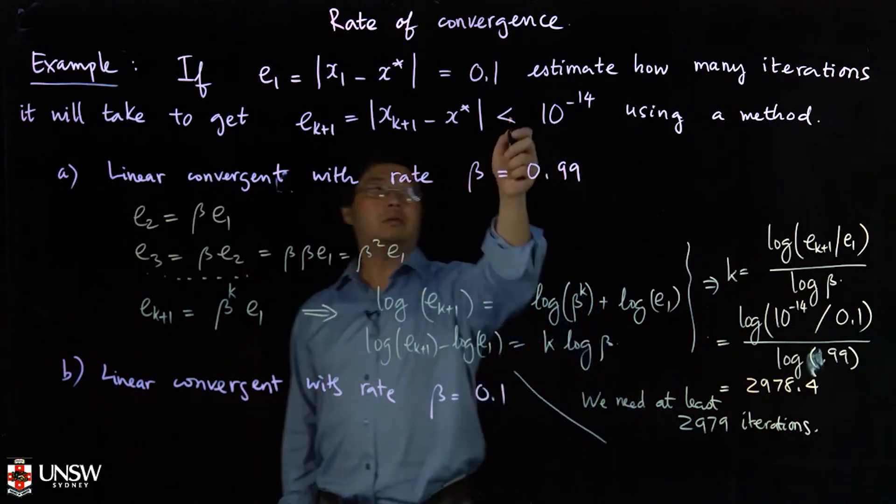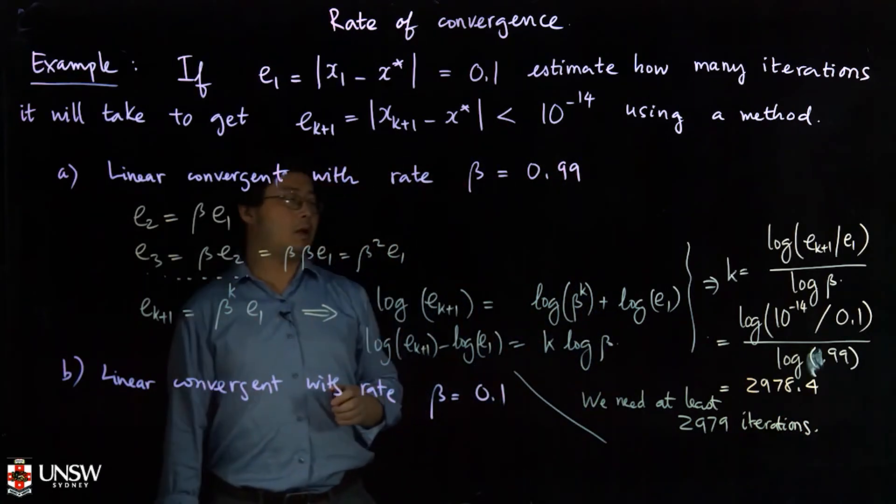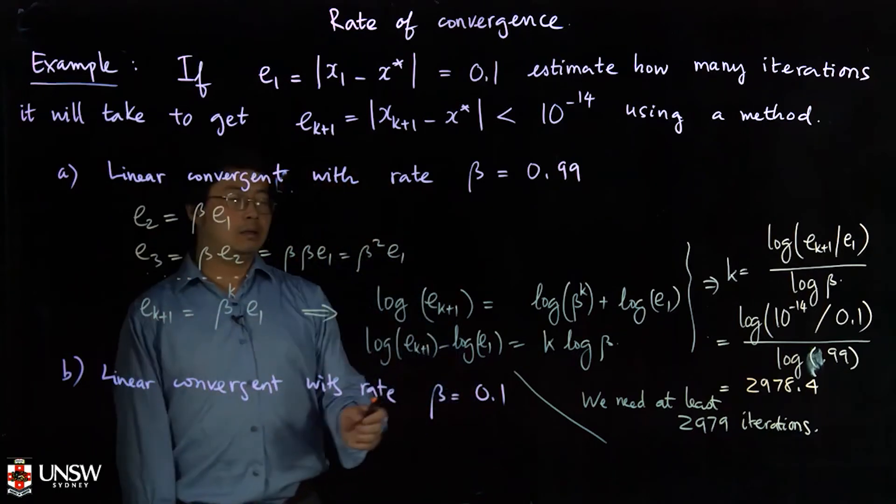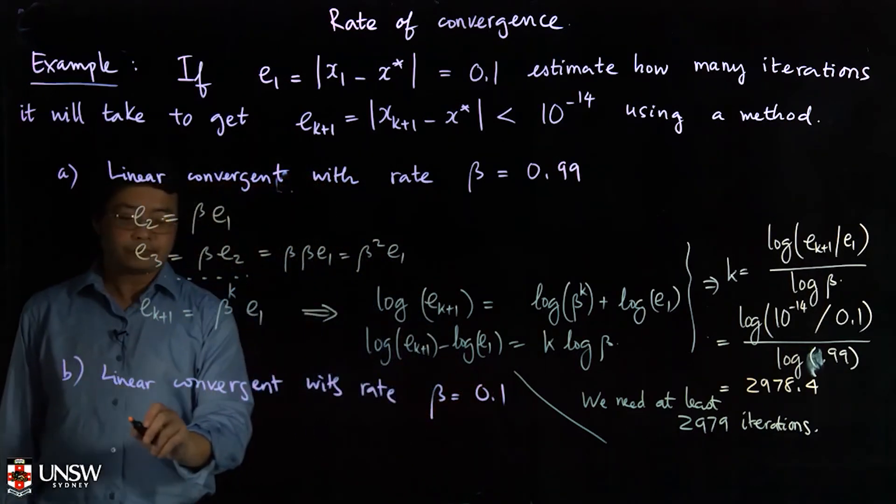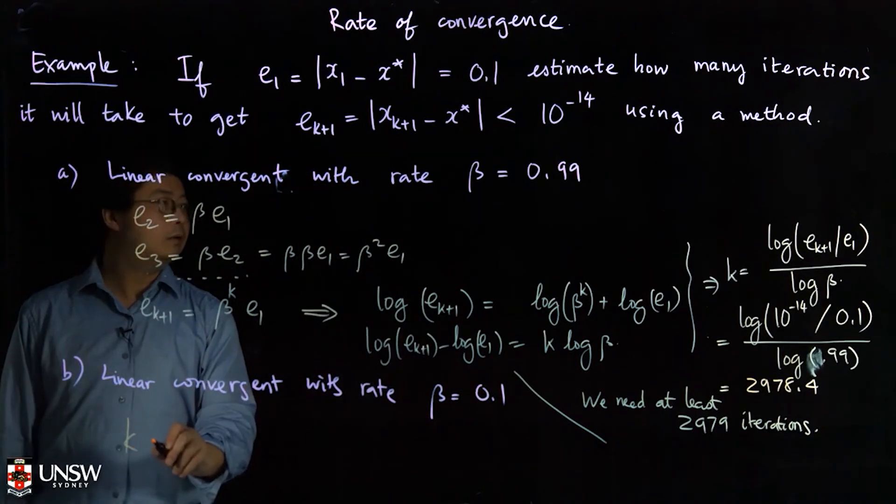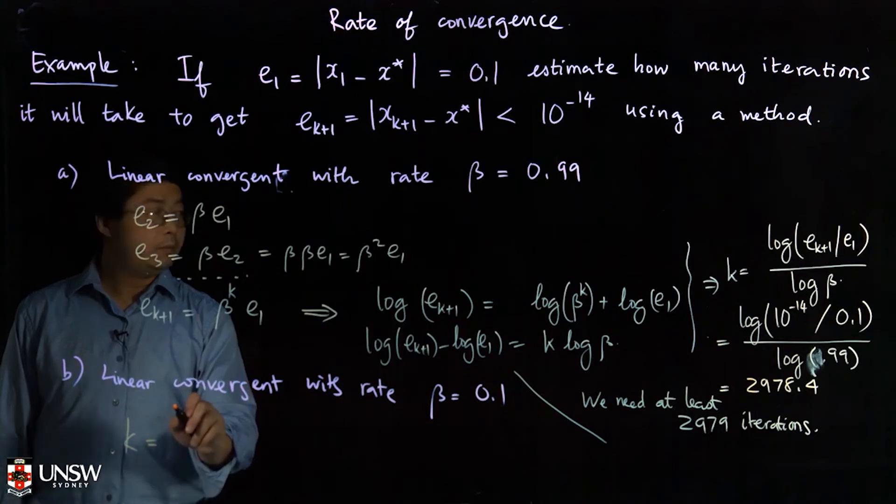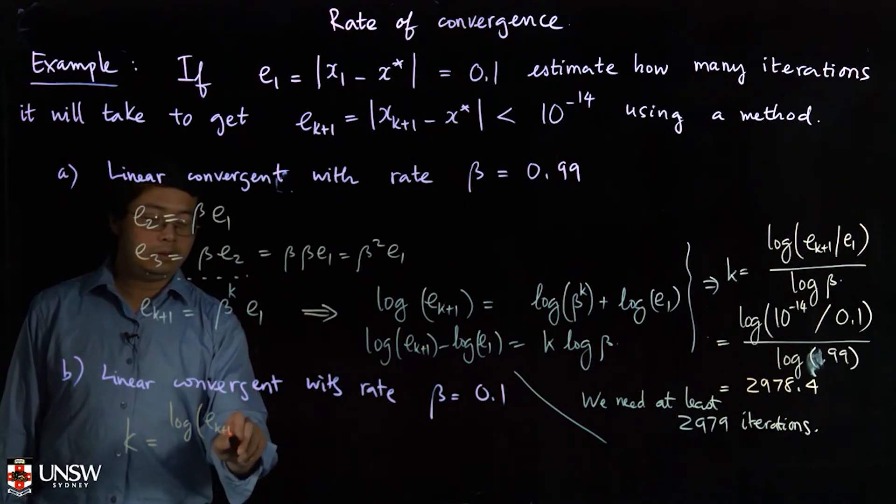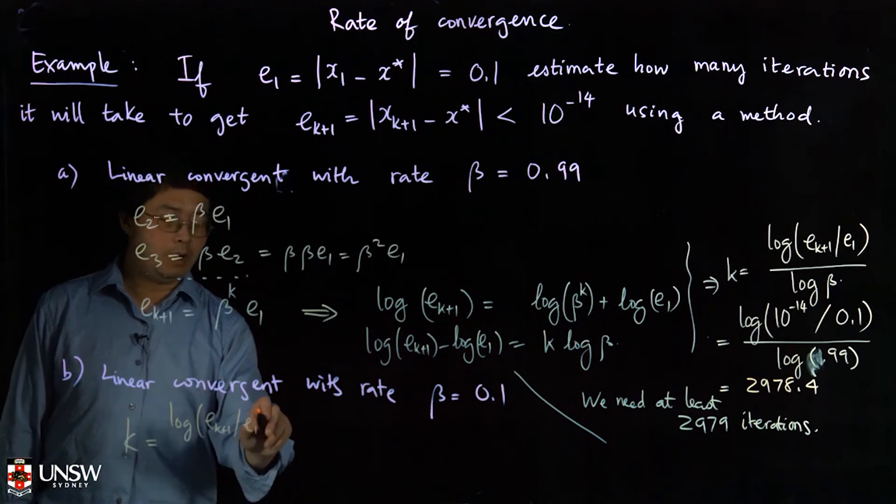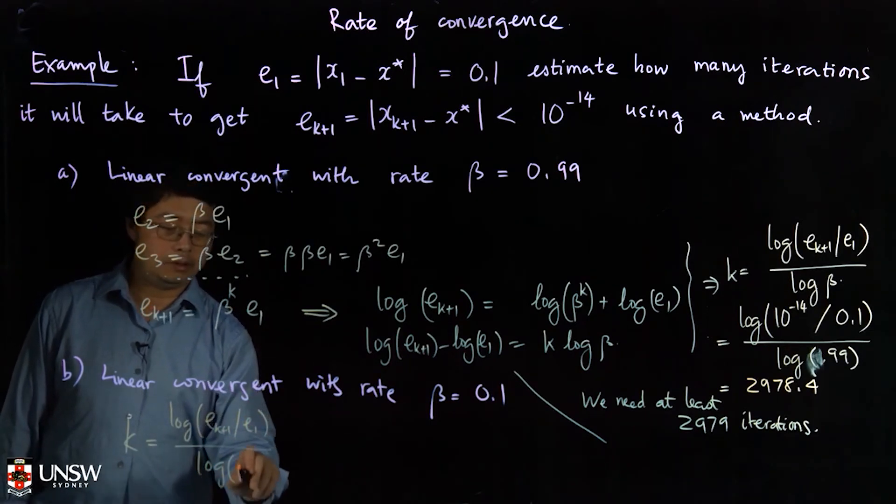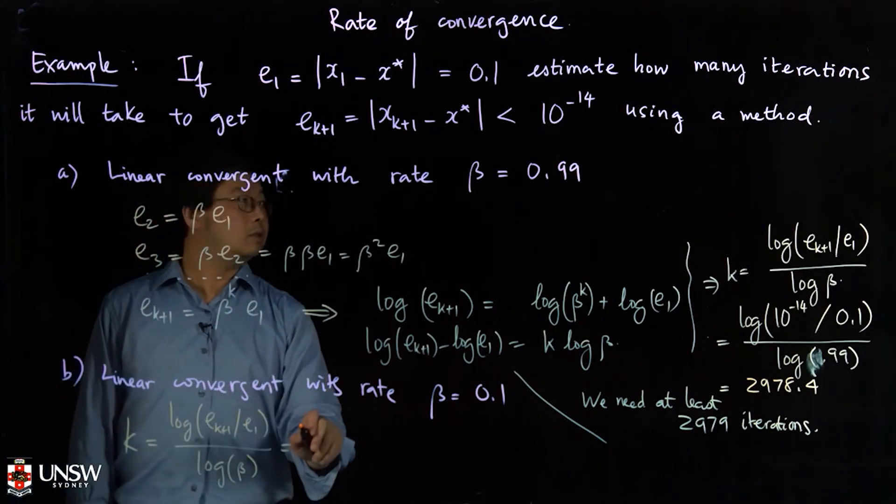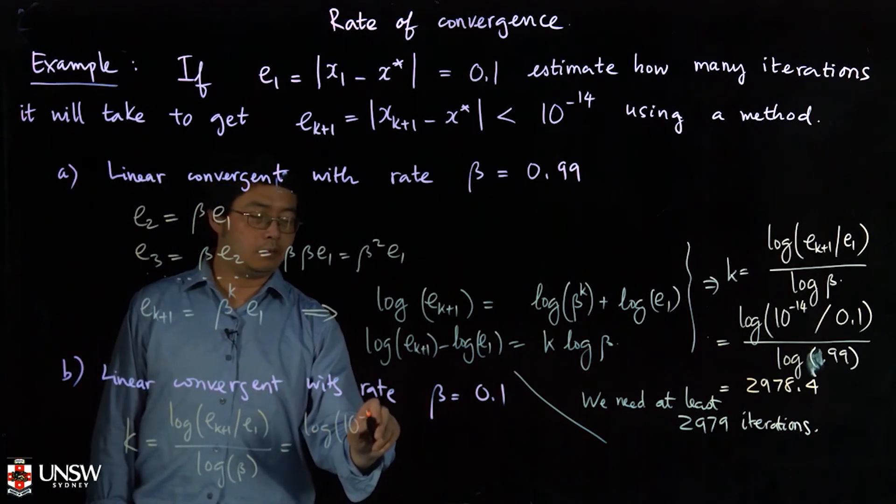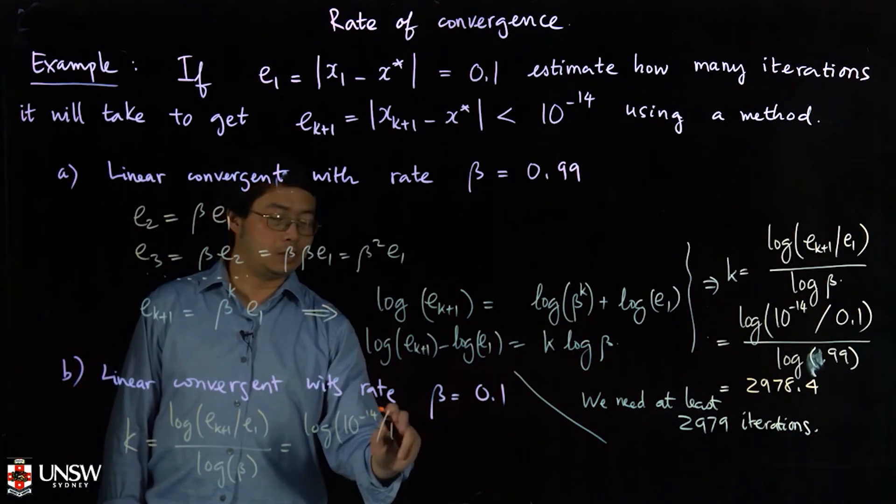To get to the error less than 10^{-14}. And for the second case, you have the same formula but different beta. So it will be log(e_{k+1}/e1) divided by log(β). In this case we have log(10^{-14}/0.1) divided by log(0.1).